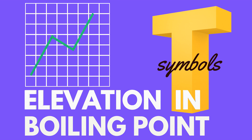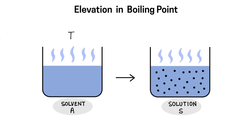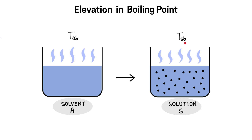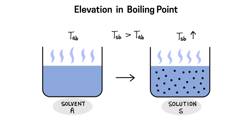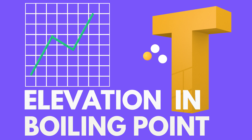Now let's look at this symbolically. On one side we have pure solvent, denoted by 'a', and on the other side we have solution, denoted by 's'. We boil both liquids and observe their boiling points. The boiling point of solvent is TAB, and the boiling point of solution is TSB — where 's' stands for solution and 'b' for boiling point. We notice that the solution's boiling point has increased. Mathematically, TSB is greater than TAB — meaning the solution's boiling point is greater than the solvent's boiling point. So here we witness elevation in boiling point. Let's now look at this graphically.